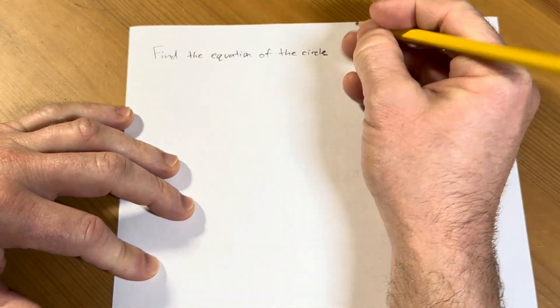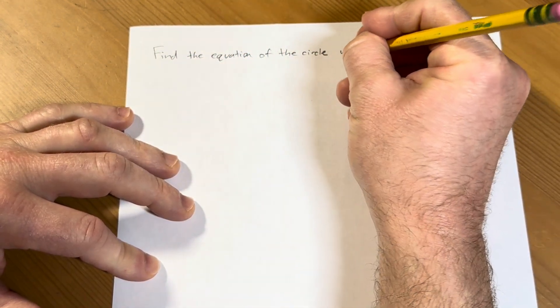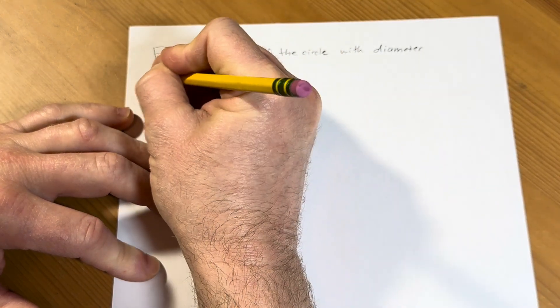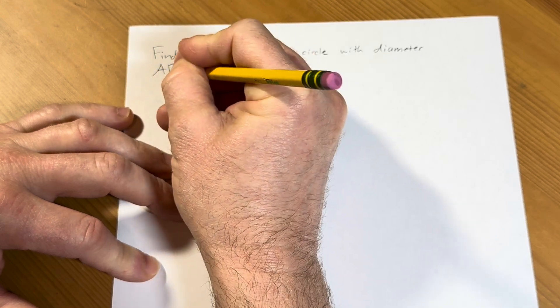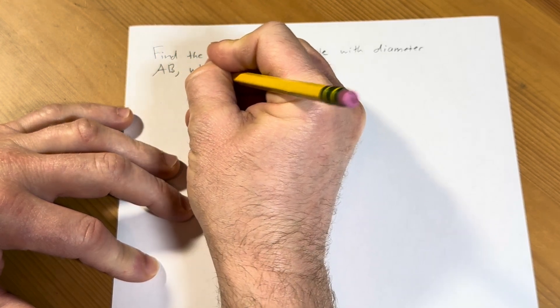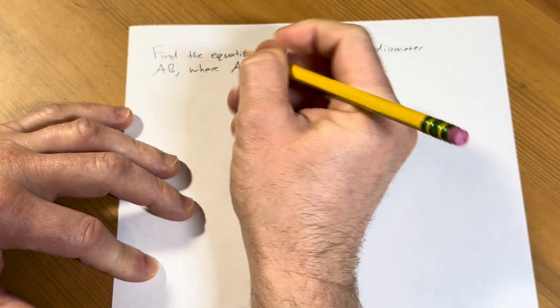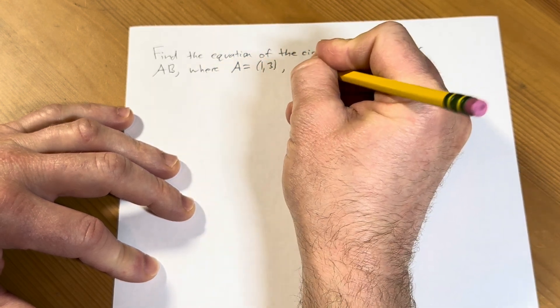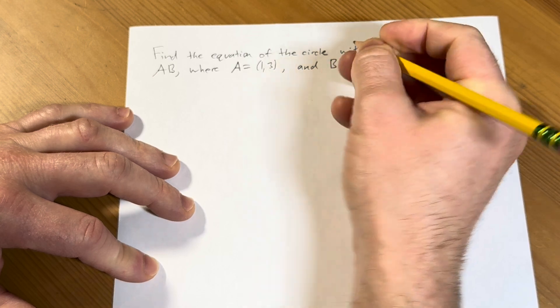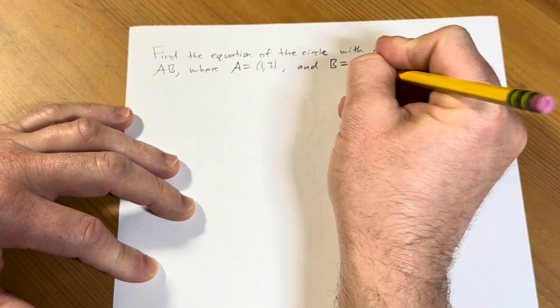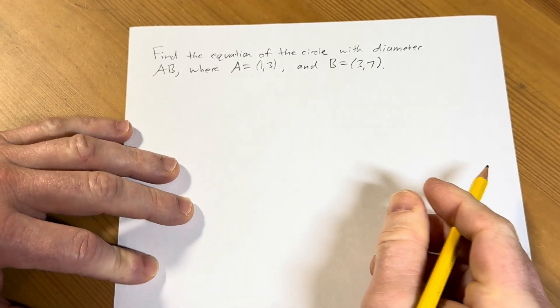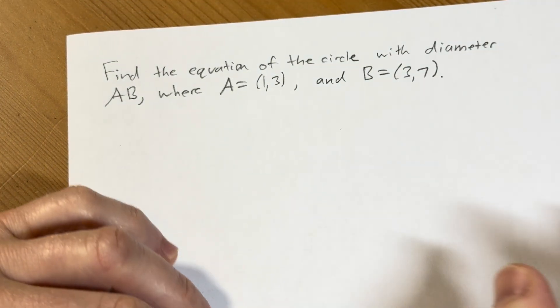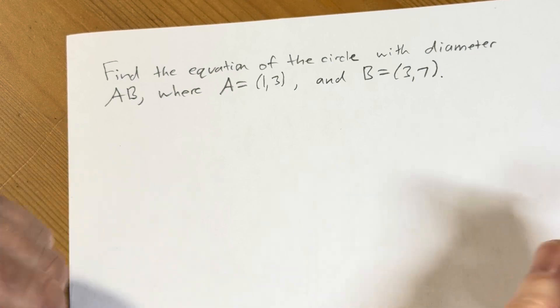Find the equation of the circle with diameter AB, where A is equal to (1,3) and B is the ordered pair (3,7). Okay, so with this information we have to find the equation of the circle. Let's go ahead and go through it. Solution.